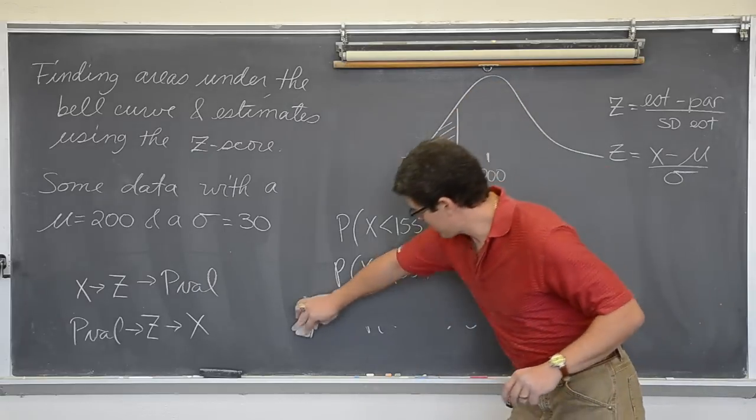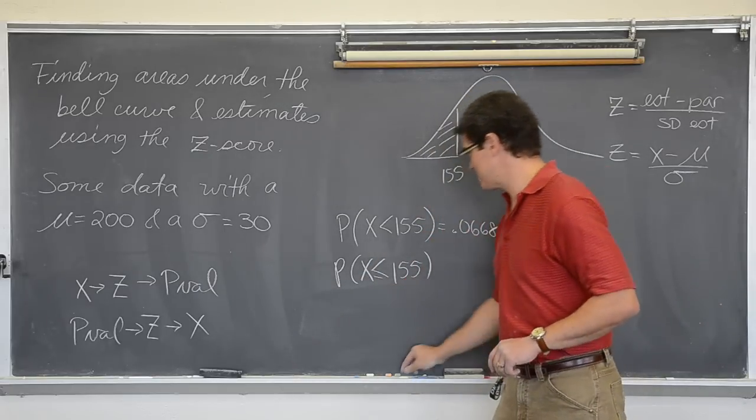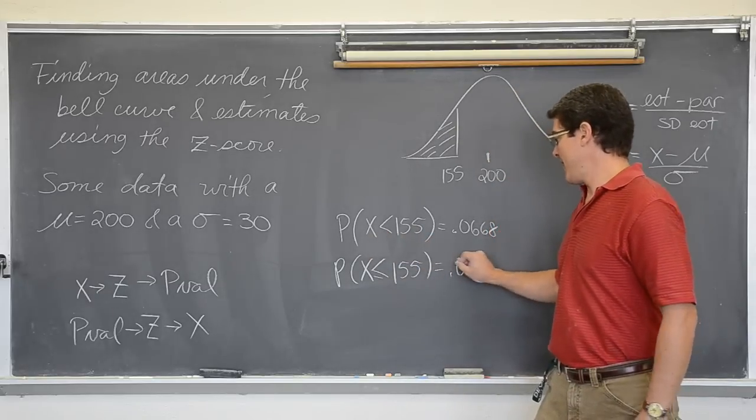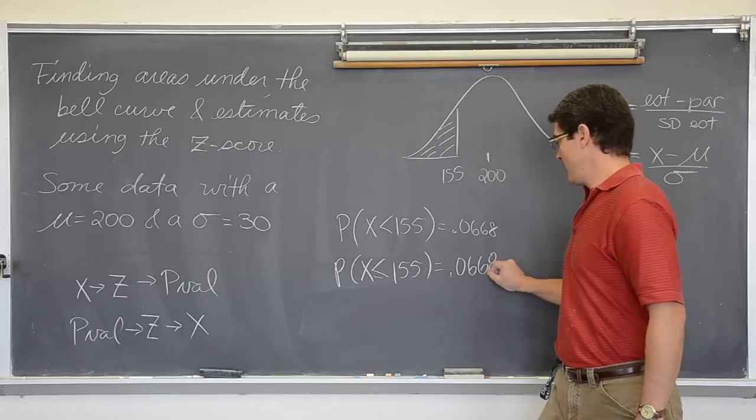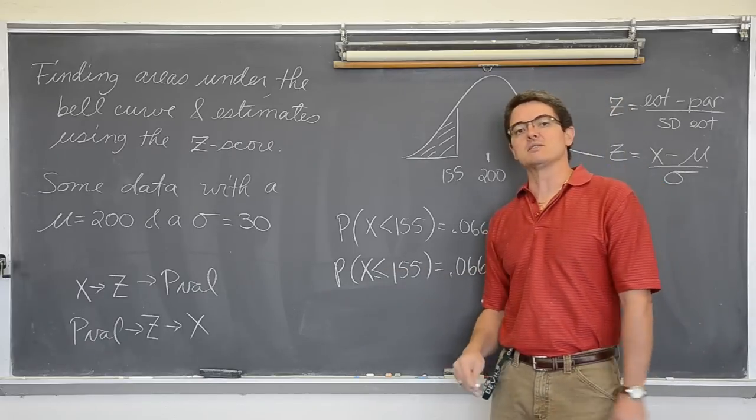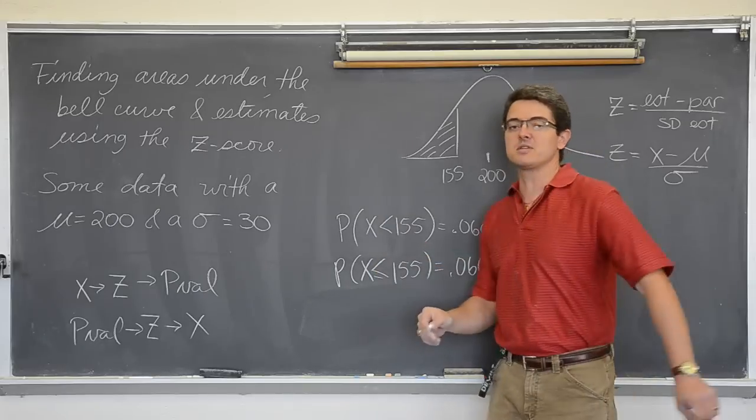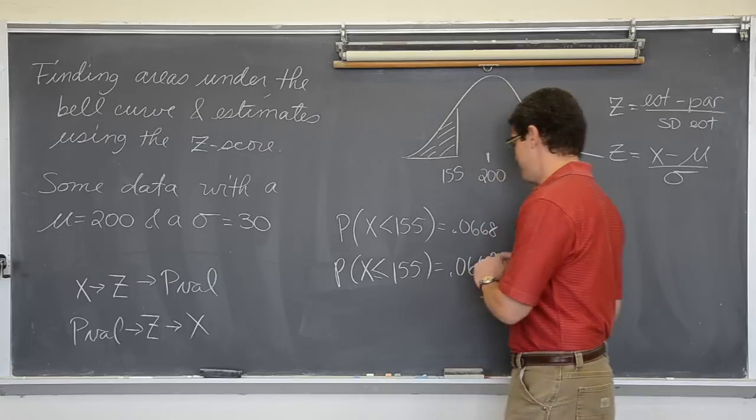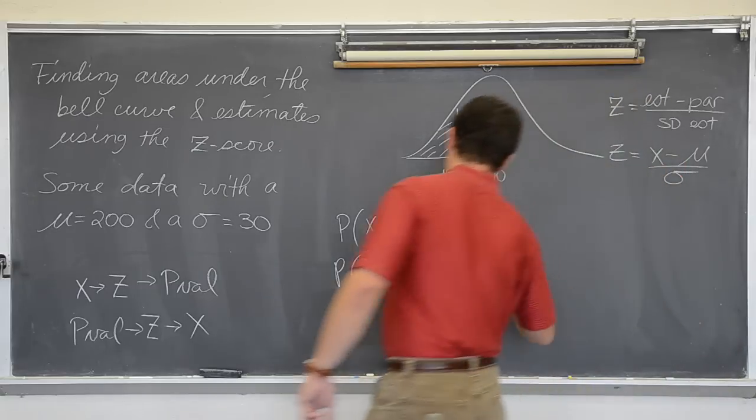So, the probability of observing a value less than 155 is the same as the probability of observing 155 or less. So, you have to use the proper notation for the wording of your question, but it will not change your answer. BAM! Alright, moving on.